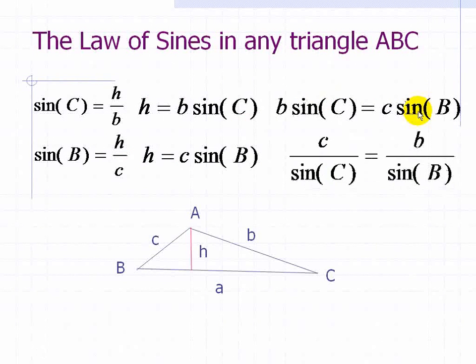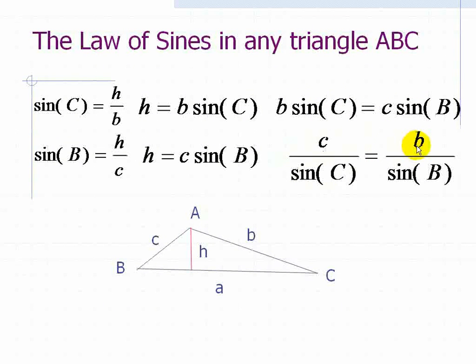Now dividing respectively by the sine of C on both sides and the sine of B on both sides, we have the following relationship. That is, we have all the variables associated with the angle C and its opposite side c is equal to the ratio of b over the sine of B.